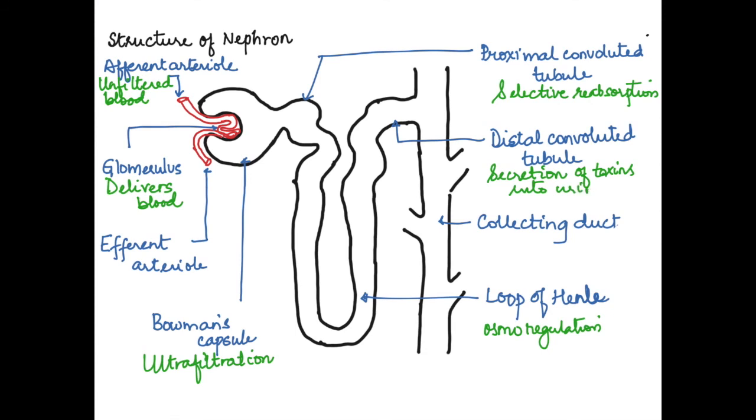In the distal convoluted tubule, there is secretion of toxins into the urine. Finally, the urine that is now formed is delivered to the pelvis through the collecting ducts.